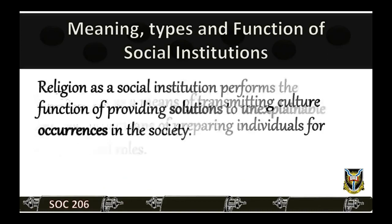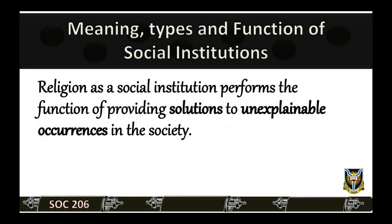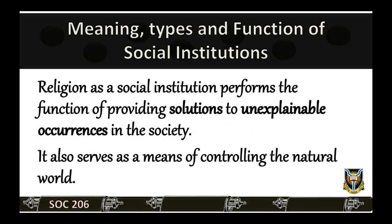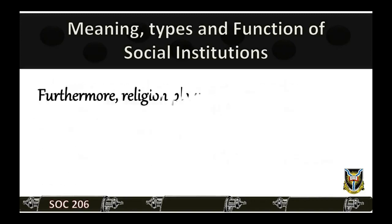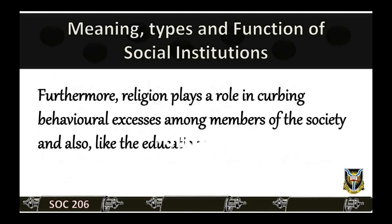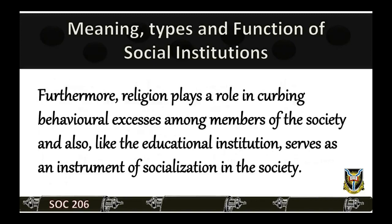Religion, as a social institution, performs the function of providing solutions to unexplainable occurrences in the society. It also serves as a means of controlling the natural world. Furthermore, religion plays a role in curbing behavioral excesses among members of the society and, like the educational institution, serves as an instrument of socialization in the society.